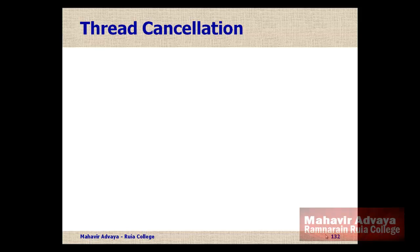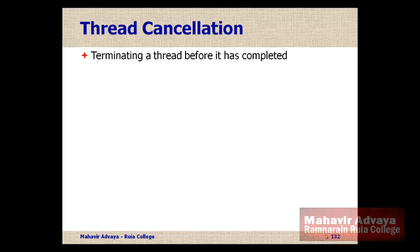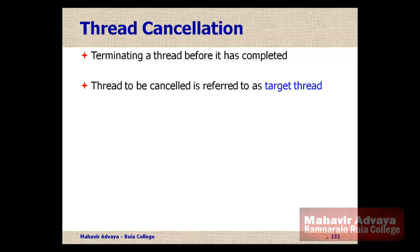Thread cancellation is the task of terminating a thread before it has completed its execution. For example, if multiple threads are concurrently searching for information in a database and one thread finds the result, the other threads need to be terminated to avoid unnecessary searching. The thread that is to be cancelled is referred to as the target thread.